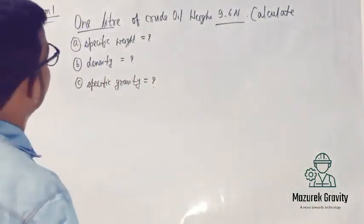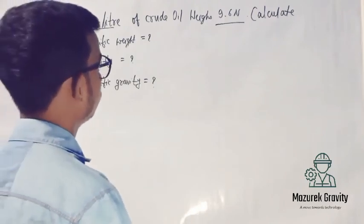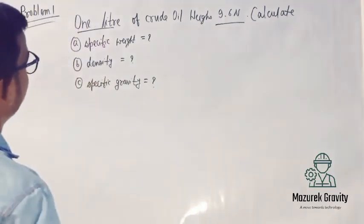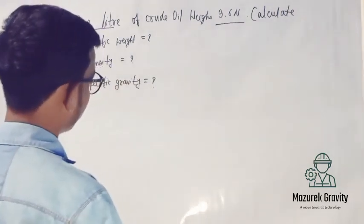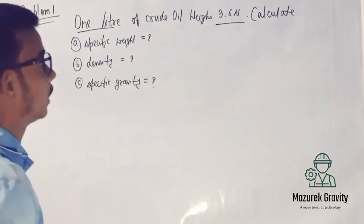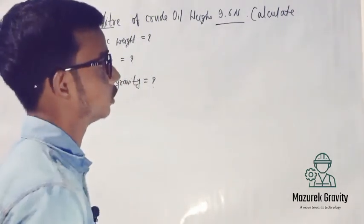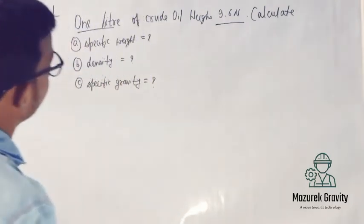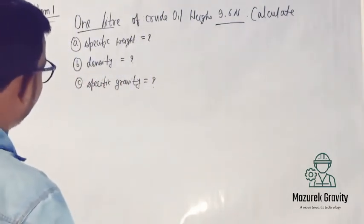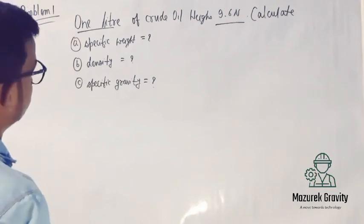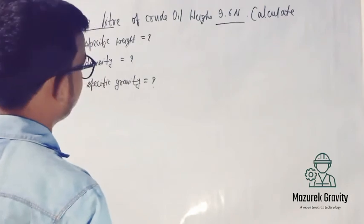In this question we have given one liter of clear oil which weighs 9.6 Newton. We have to calculate its specific weight, density and specific gravity. So let's solve the problem.